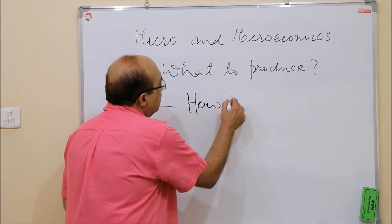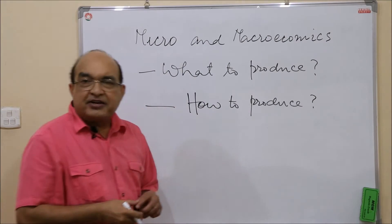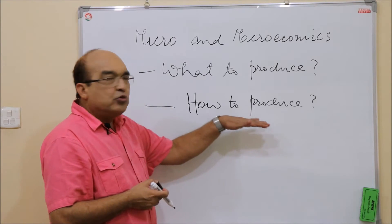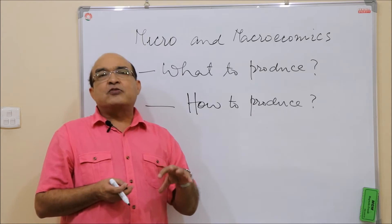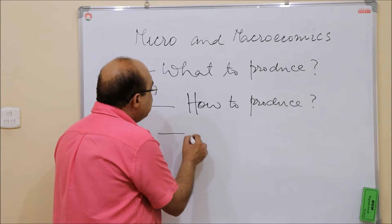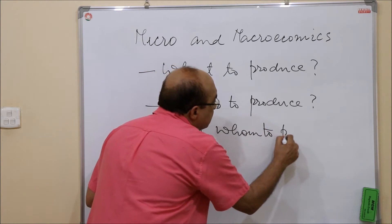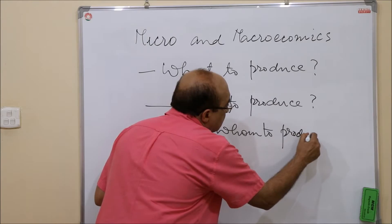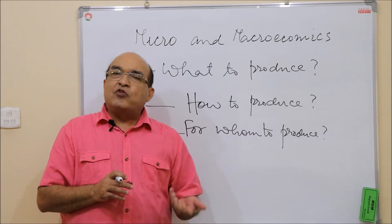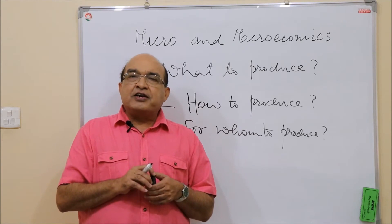The second question is: how to produce. Every economy has limited resources — whatever productive resources it has must be allocated to the production of commodities. So in what manner are the factors of production to be devoted to the production of goods and services? And finally, for whom to produce — that is, who will be benefited from these commodities and in what manner.